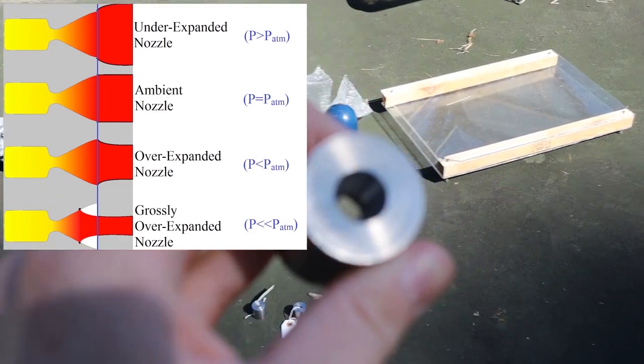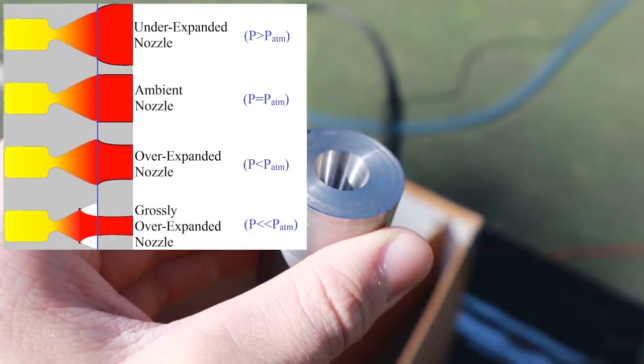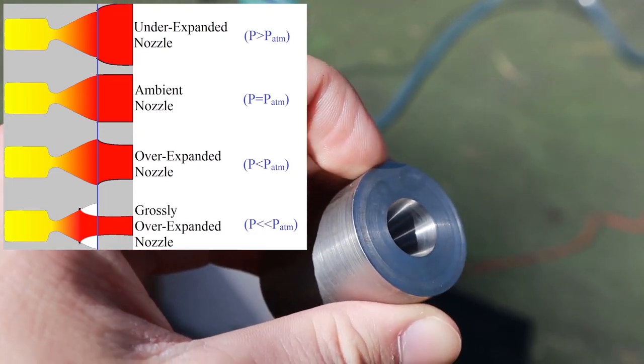And because of that, you will expect the thrust or the specific impulse to be much lower than a nozzle that was to produce, let's say, 100 kilopascals.